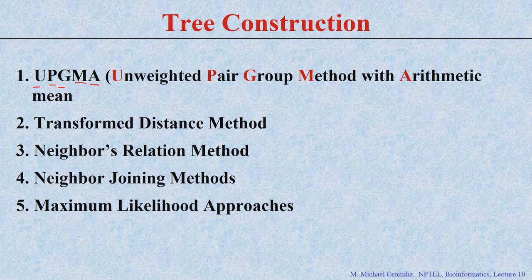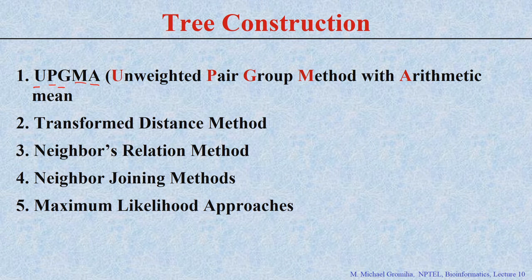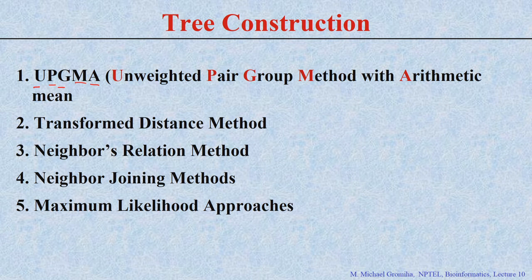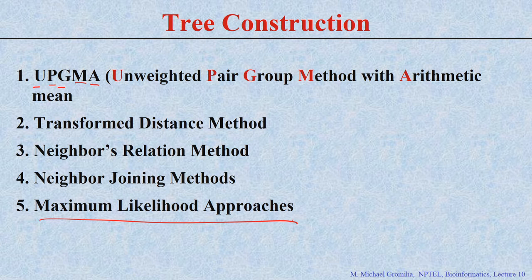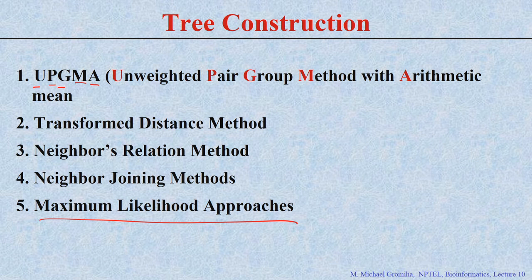UPGMA has good understanding, but it has some issues and disadvantages. To rectify that, several other methods have been proposed: the transform distance method, neighbor relation method, neighbor joining method, maximum likelihood approaches, and so on. We will see how to construct trees based on UPGMA and what principles are used in other types of methods.